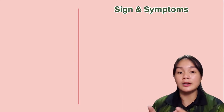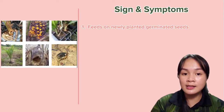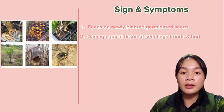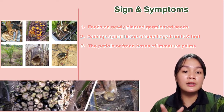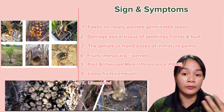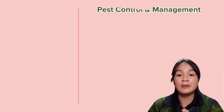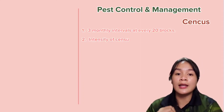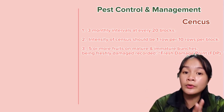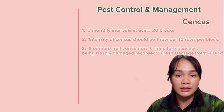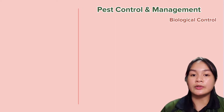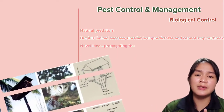Symptoms and signs caused by rodent pests on oil palm include the pests feeding on newly planted germinated seeds, damaging the meristematic tissue of the seed, frond and bud, the petiole or frond base of immature palms, and even the fruit mesocarp. They can also cause male inflorescence loose fruit and unopened flowers. The first control and management method is through census: monitoring at three-month intervals at every 20 blocks, with the intensity of one row per ten rows per block. If five or more freshly damaged fruits are recorded, biological, chemical, and physical control should be applied.